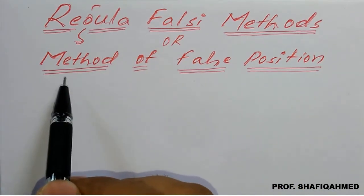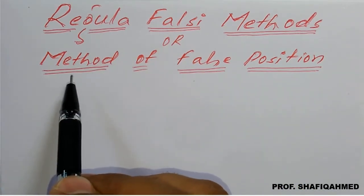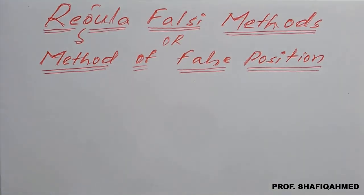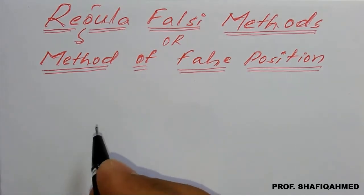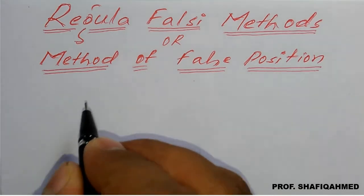In this method we will see how to find a transcendental equation or algebraic equation for accuracy, means root for the accuracy. So what this method says we will see the formula here.